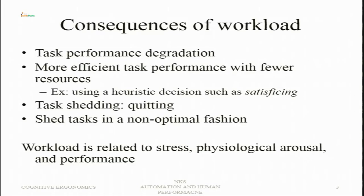What are the consequences of workload? There are several consequences, and understanding them is important because they relate to automation. First, there is task performance degradation — either one or both tasks are degraded. It is important that the priority task — the primary task — should not be affected. More efficient task performance with fewer resources is also possible, for example using heuristic decision-making such as satisficing.